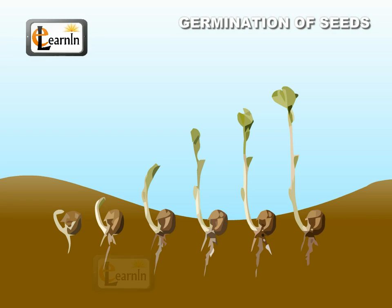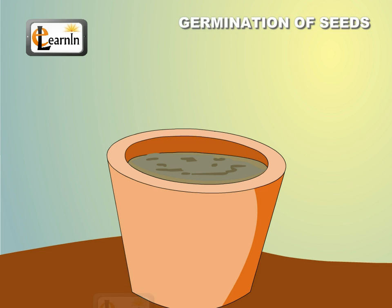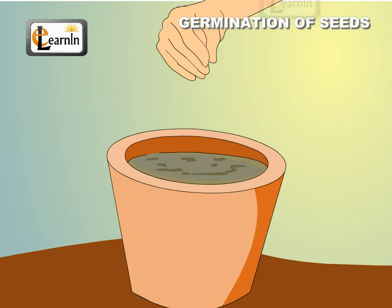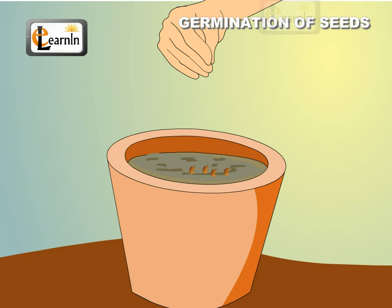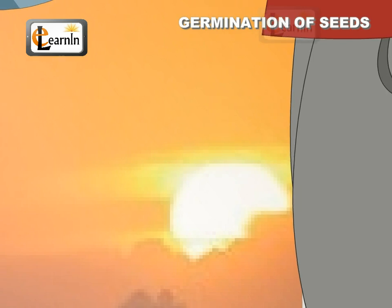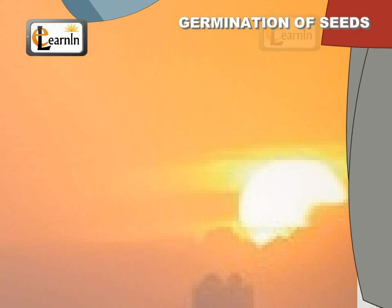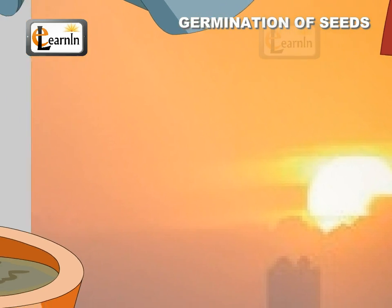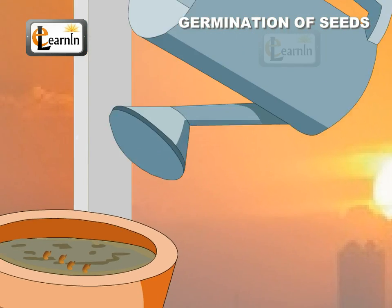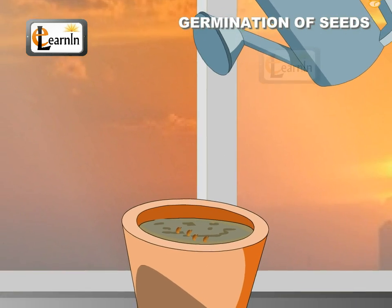Let us conduct an experiment to see how seeds germinate. Take a small pot from your garden and fill it with good soil. Then sow some pumpkin seeds into the pot. The pot should be kept in a warm place so that it gets enough sunlight.